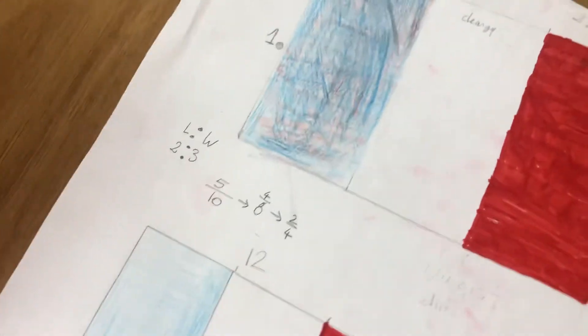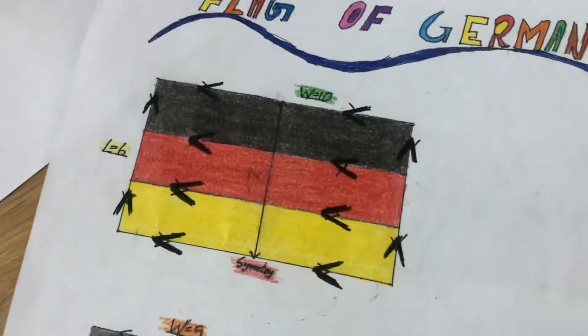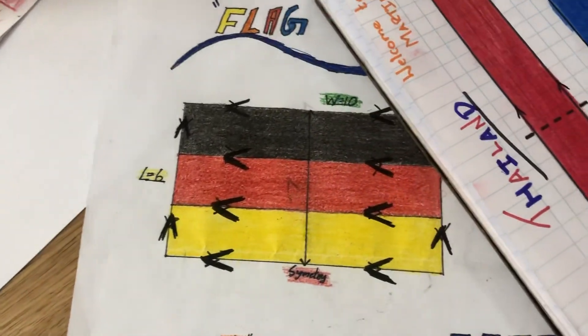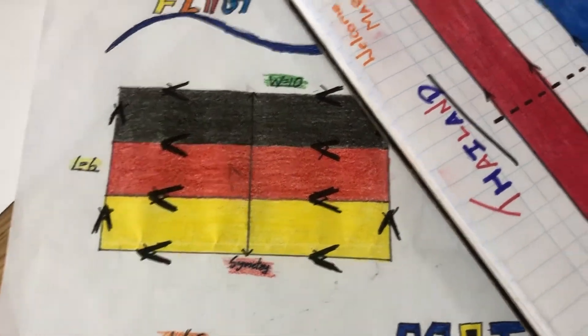We can see lots of maths. We had symmetry. We had shape. We had parallel lines and ratios and fractions. Fantastic. Thank you for watching. Please like, share and subscribe. And goodbye from all. Bye!